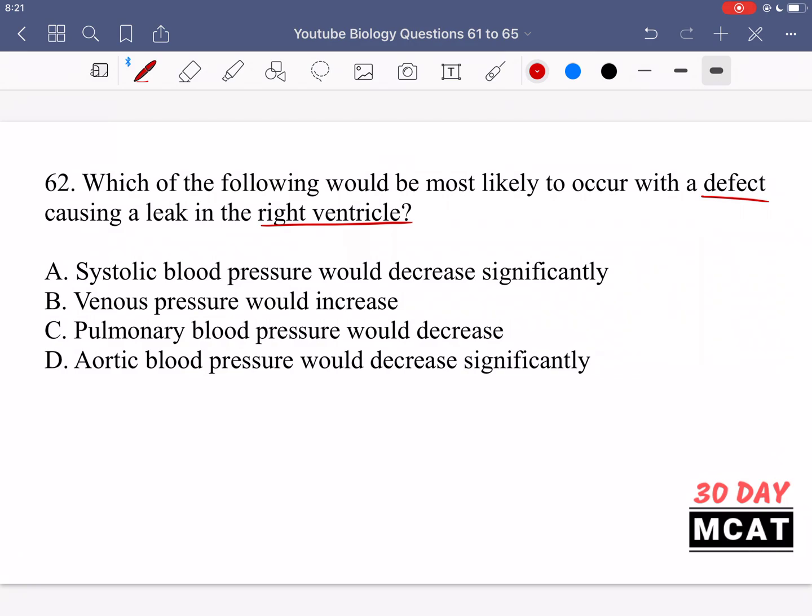Option B is saying venous pressure would increase. No, it would likely decrease if there's less pressure available for the ventricles to contract. Option C is saying pulmonary blood pressure would decrease. This is a better answer than A. Pulmonary blood pressure we definitely know would decrease because that is what the right ventricle is responsible for. It's possible that systolic blood pressure would also decrease but we don't know if it would be significant enough because most of that pressure comes from the left ventricle and we're assuming the left ventricle is still perfectly healthy. So this significant part makes A an unsure answer. C is a much stronger answer. D is saying aortic blood pressure would decrease significantly. Once again no, that's the left ventricle not the right ventricle.